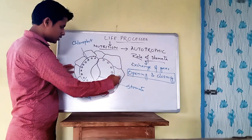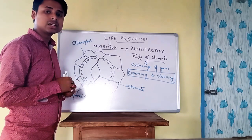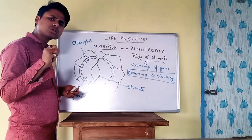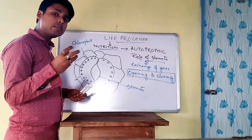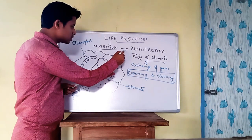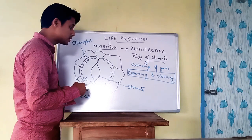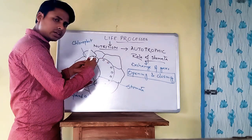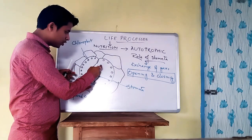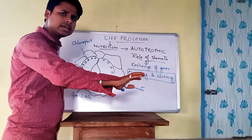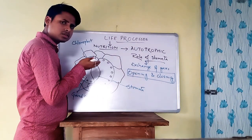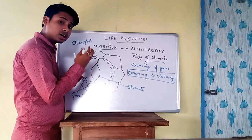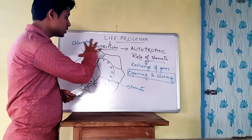The structure of stomata includes the guard cell and the stomatal aperture. The opening and closing of stomata depends on the movement of water. When water flows inside the leaf and reaches the epidermal layer, the entry of water makes the guard cell swell up, which helps in the opening of the stomata. When water flows out of the epidermal cell, the guard cell will shrink, causing the closing of the stomata.